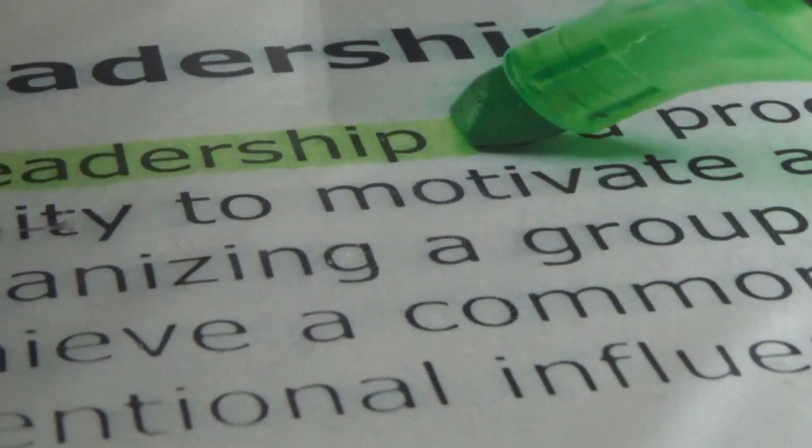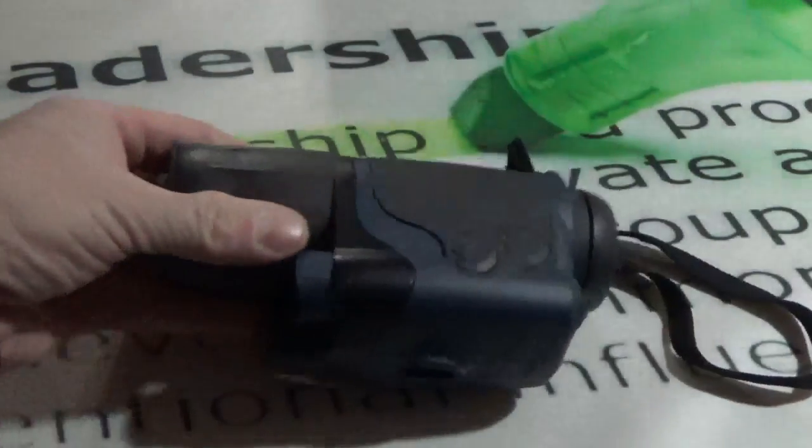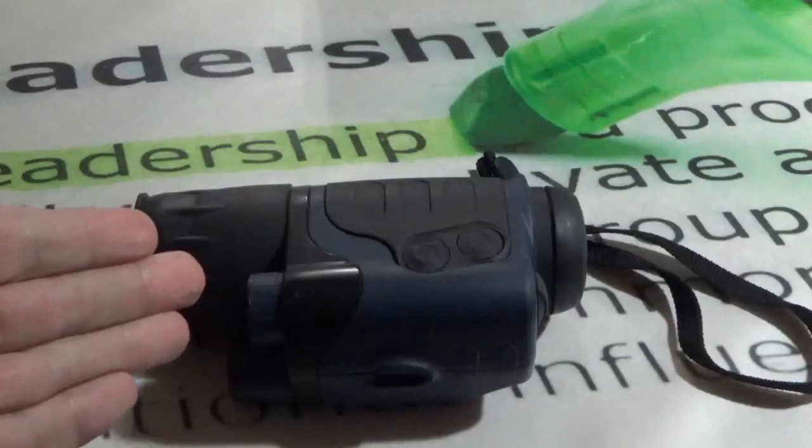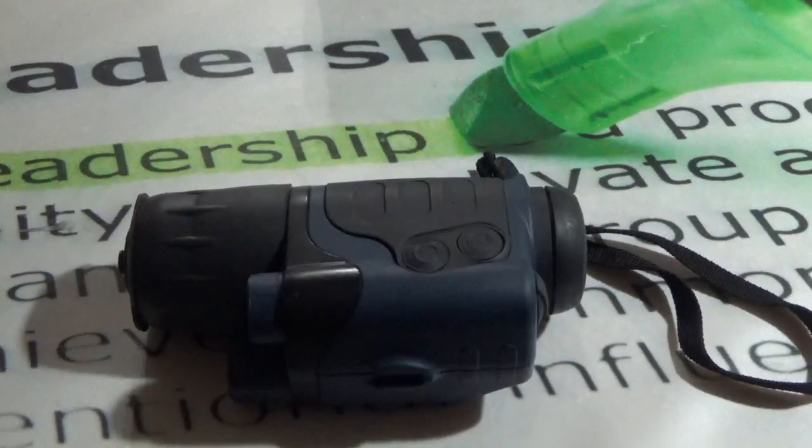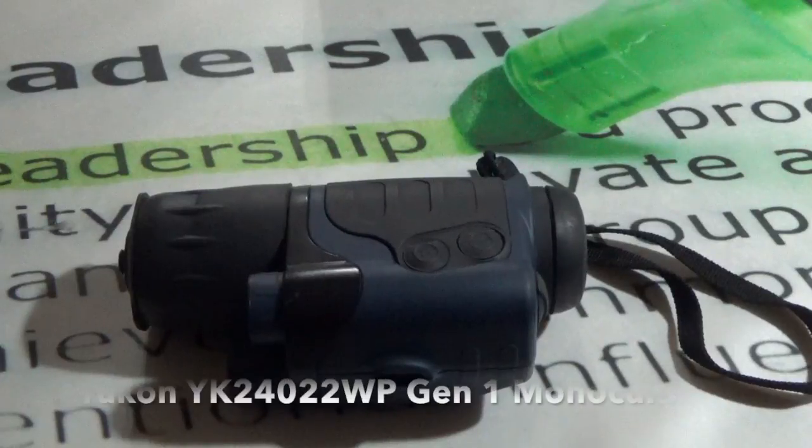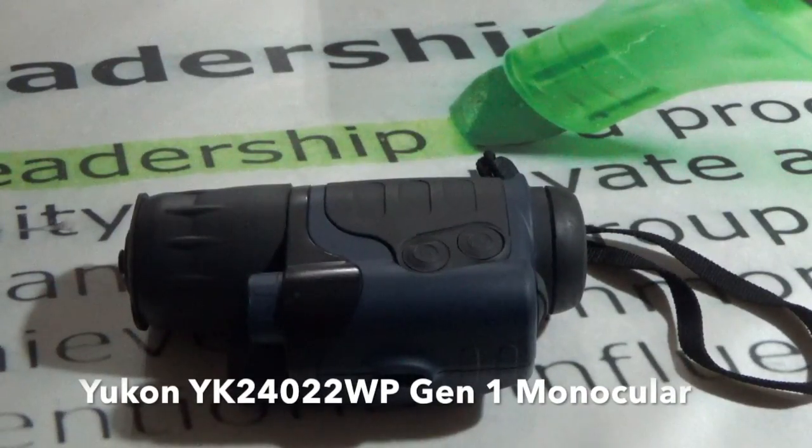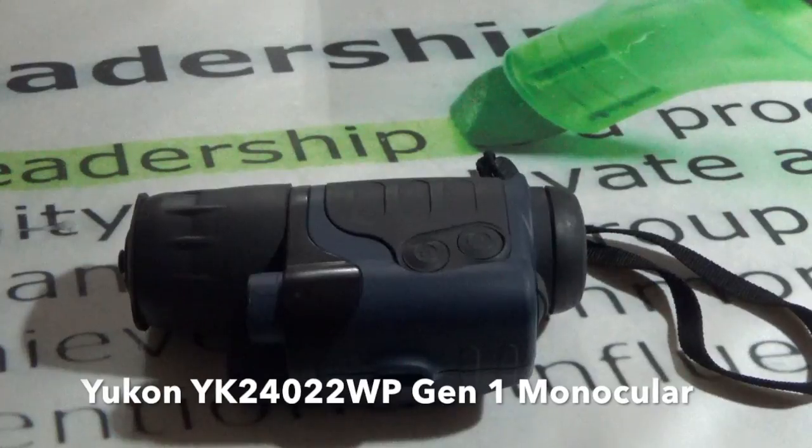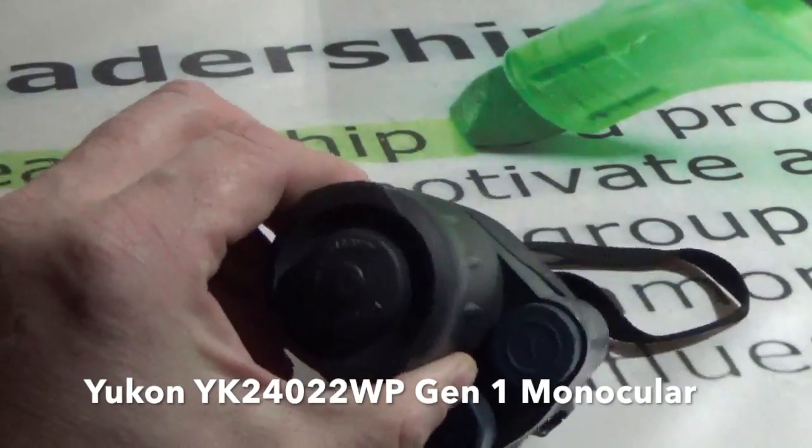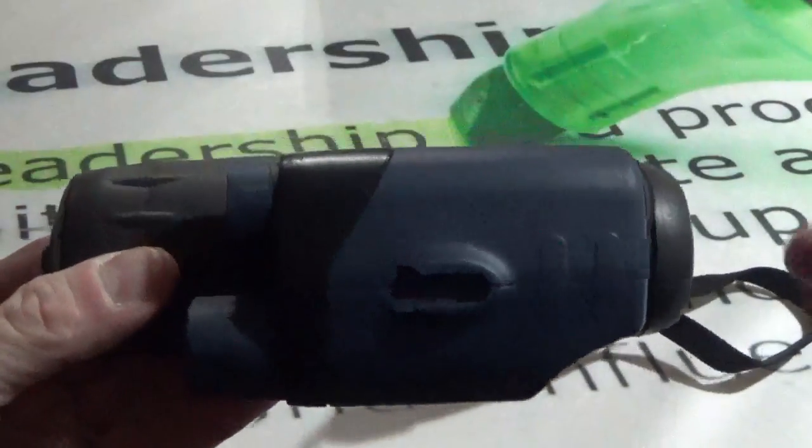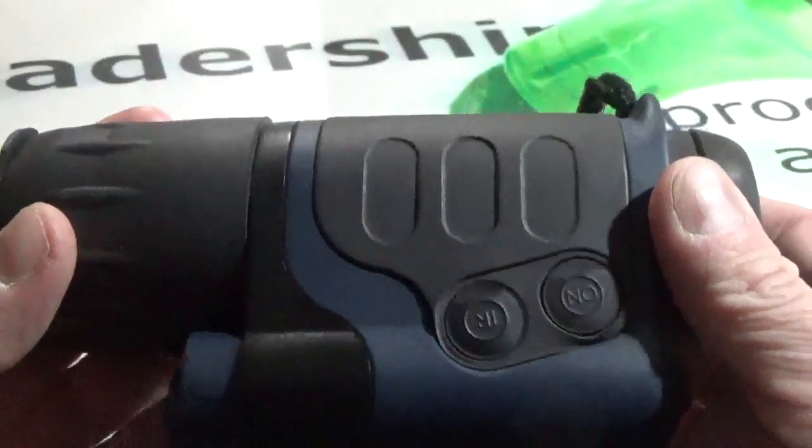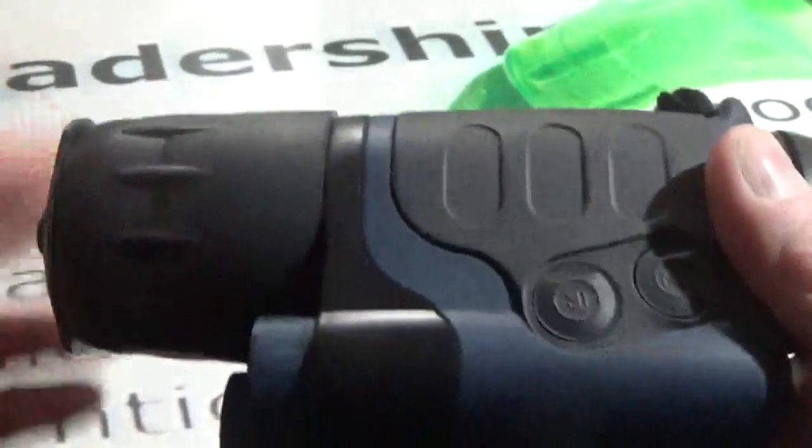How you doing everybody. I really do have something special. Check this out. Today we're going to review night vision equipment, in particular the Yukon YK24022WP Gen 1 monocular. This is a piece of equipment I picked up about 2011, around this time of year, December or November 2011. So I've had this for half a decade and it's been working well for me.